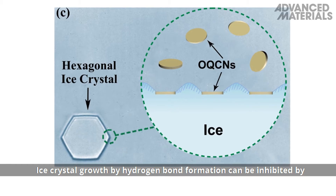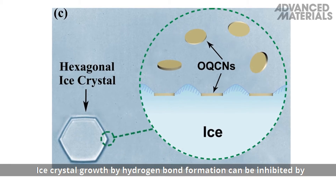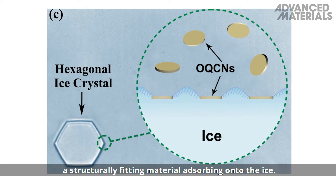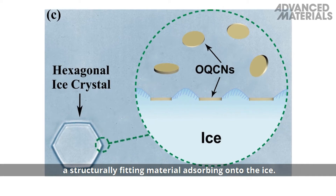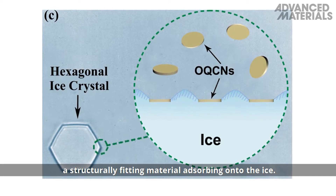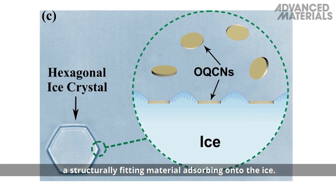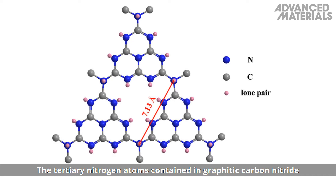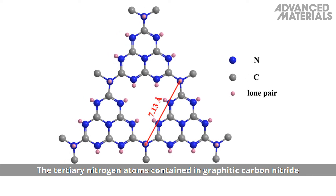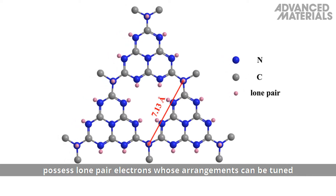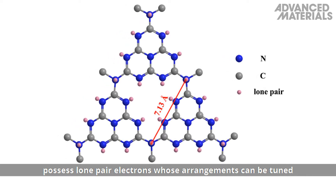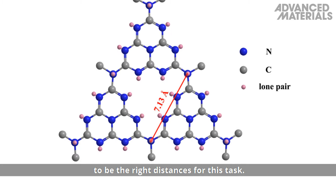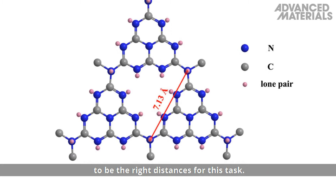Ice crystal growth by hydrogen bond formation can be inhibited by a structurally fitting material absorbing onto the ice. The tertiary nitrogen atoms contained in graphitic carbon nitride possess lone pair electrons whose arrangements can be tuned to the right distances for this task.